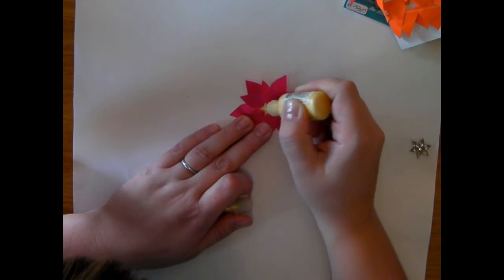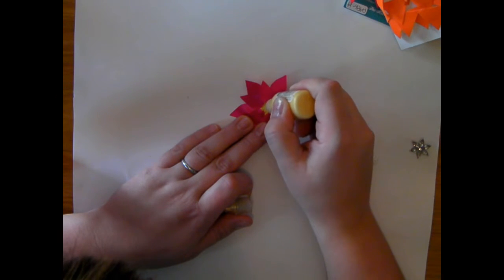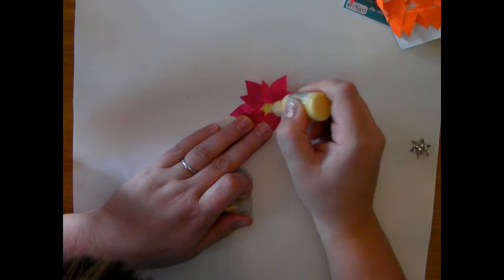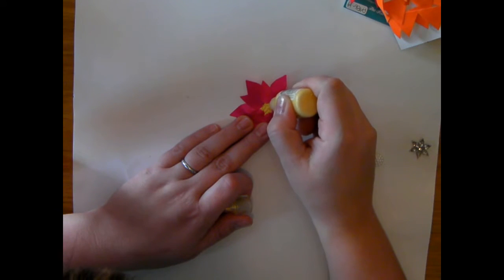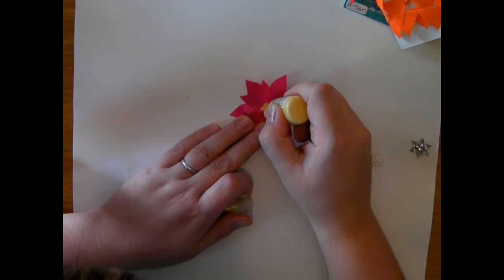So all I'm doing is going around in a circle and just adding little dots of the Liquid Pearls. And it's hard to see in the video, but what I'm doing is I'm actually pulling, as I press it down onto the cardstock, I'm pulling up and away. And it's creating kind of this little tip or this little point to kind of give the middle of the flower this kind of pointy textured look with the Liquid Pearls as I go around.